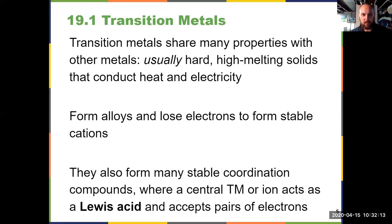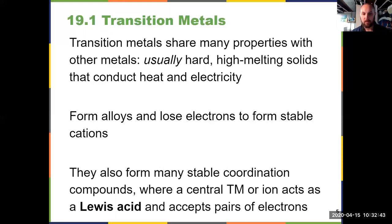What's really unique in this chapter in 19.2 and 19.3 is that transition metals can form stable coordination compounds, an idea introduced this semester in chapter 15. A coordination compound forms a coordinate covalent bond where one species contributes both electrons in the bond. Our transition metal is in the middle of the coordination compound, usually acting as a Lewis acid — accepting pairs of electrons from a ligand, which acts as a Lewis base. Together they form a coordination compound, or Lewis acid-base adduct.